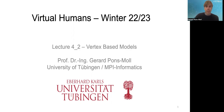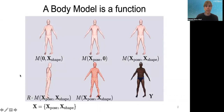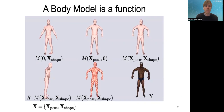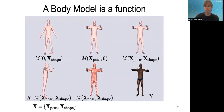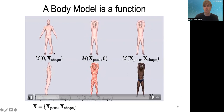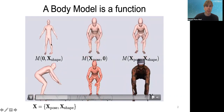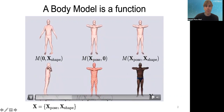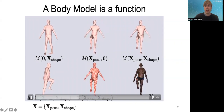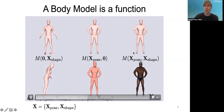Let's refresh our memories. A body model is a function that takes input parameters — in this case, the shape and the pose of a person. We want a function that allows us to control both pose and shape, so you can fix the pose and vary the shape, fix the shape and change the pose, or generate any body in any shape in a way that looks realistic.